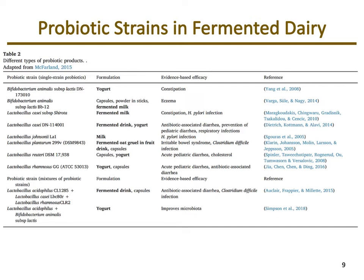Looking at probiotic strains used in fermented dairy products: these are isolated lab strains added in a controlled fermentation process. Research looks at the health benefits of these strains used to produce yogurt and different fermented milk products. Through fermentation, sugars like lactose are broken down — so someone who is lactose intolerant because they don't produce enough lactase may still be able to consume the product. Some proteins are also broken down into amino acid fragments, potentially reducing sensitivity reactions.